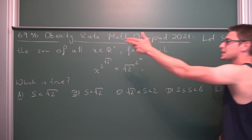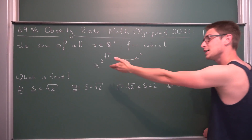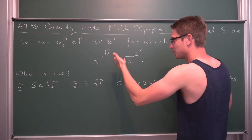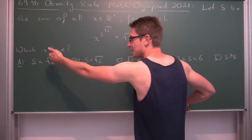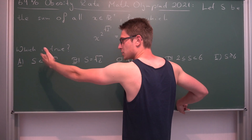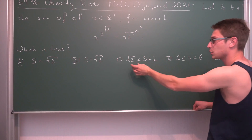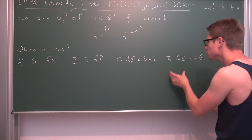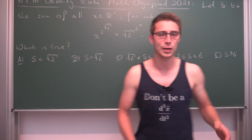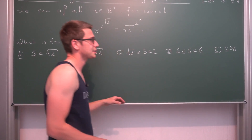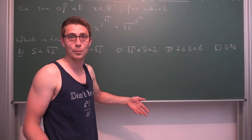Let s be the sum of all x in the positive real numbers for which this exponential equation holds. Which is true: either s is strictly less than square root of 2, s is equal to square root of 2, s is bounded between square root of 2 and 2, s is bounded between 2 and 6, or s is greater or equal to 6. That's what we are going to find out today, and it's a pretty nice problem.